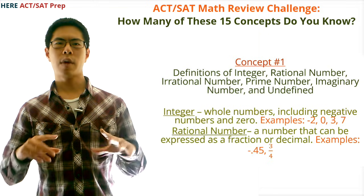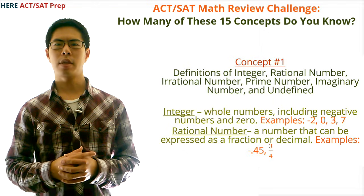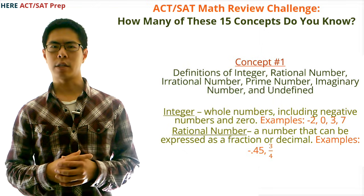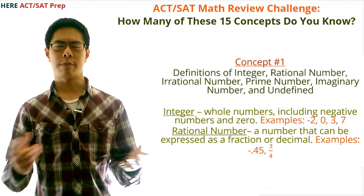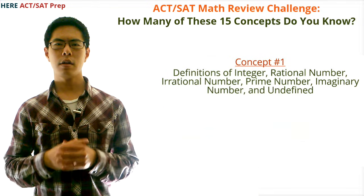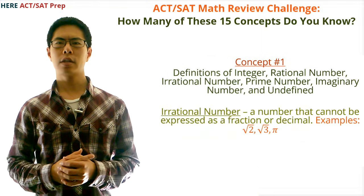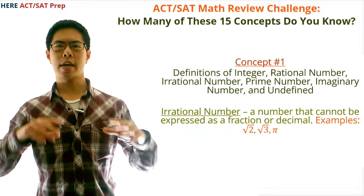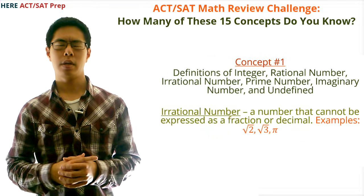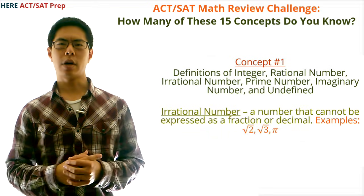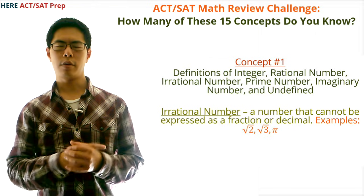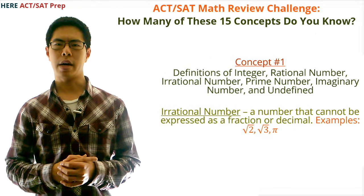Second, a rational number is a number that can be expressed as a decimal or a fraction. Examples of rational numbers are negative 0.45 and three fourths. Third, an irrational number is a number that cannot be expressed as a fraction or a decimal. Examples of irrational numbers are root two, root three, and pi.